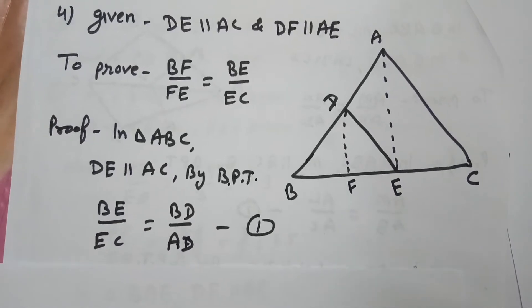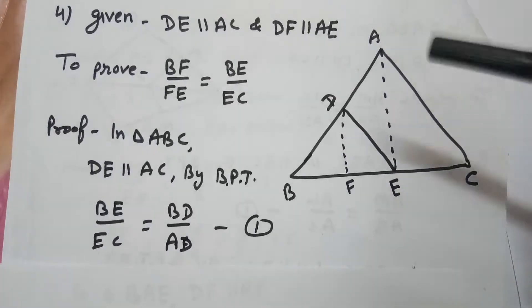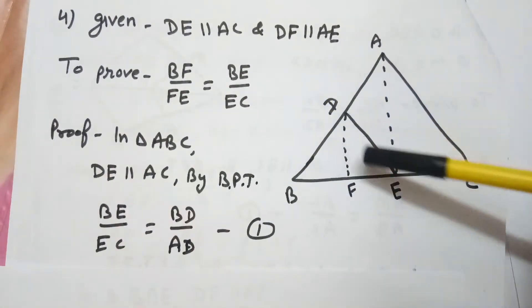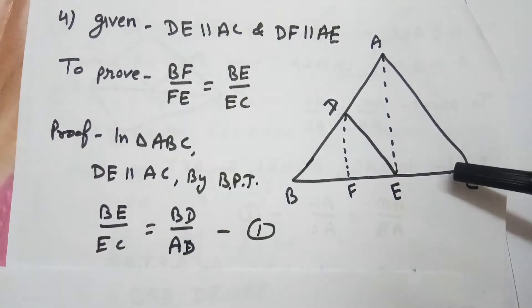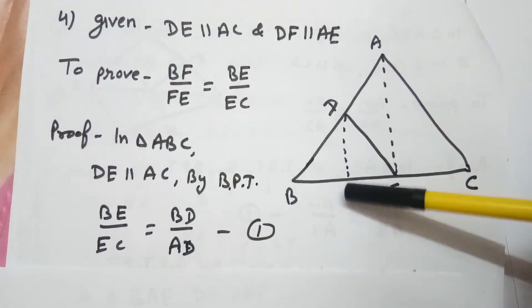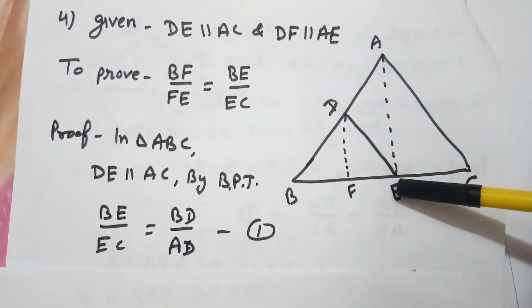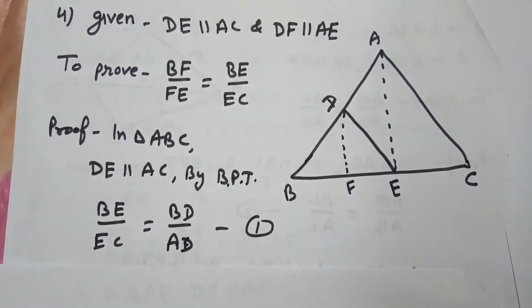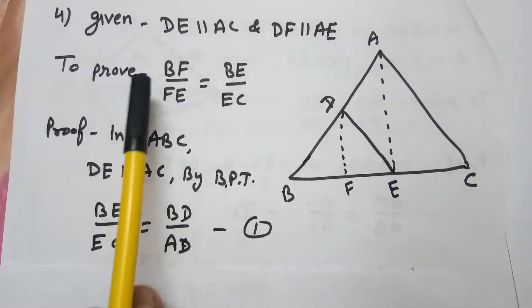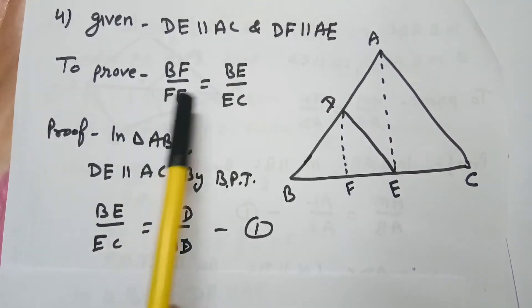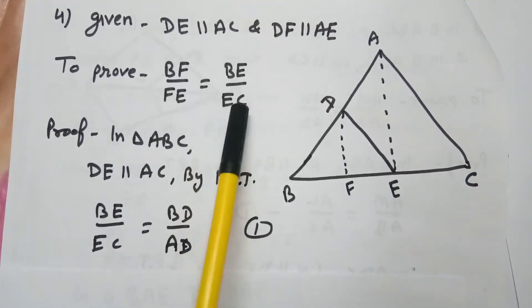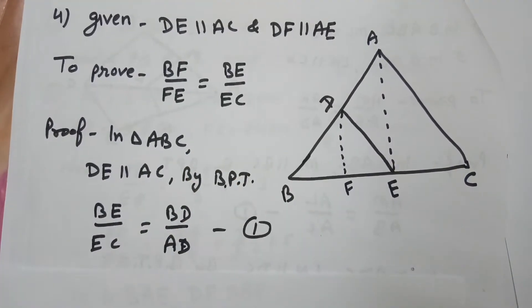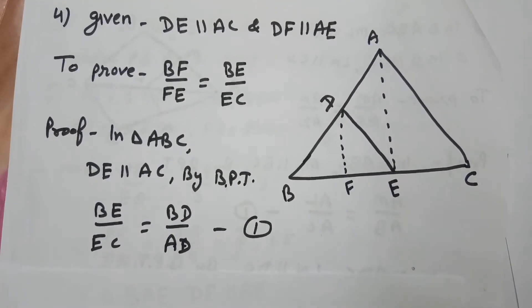In this question, it is given that DE is parallel to AC and DF is parallel to AE. We need to prove that BF over FE equals BE over EC.